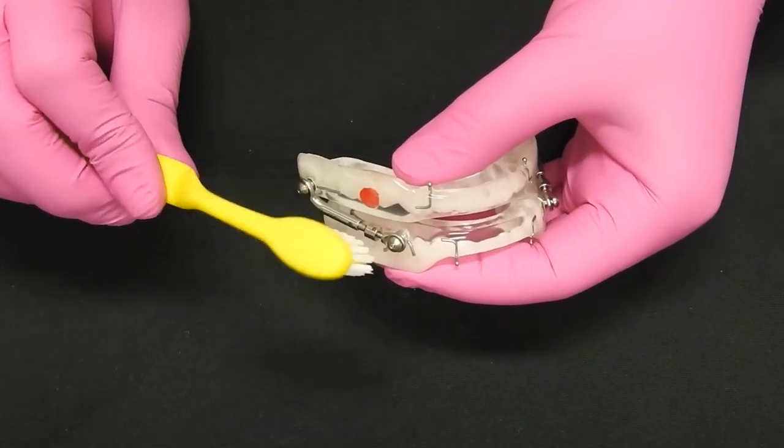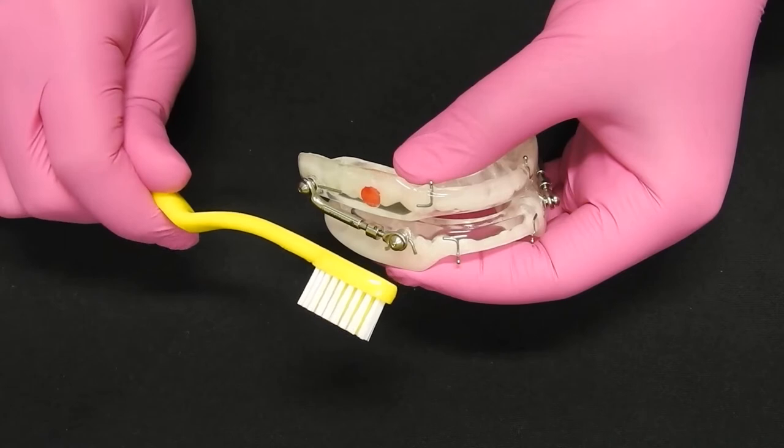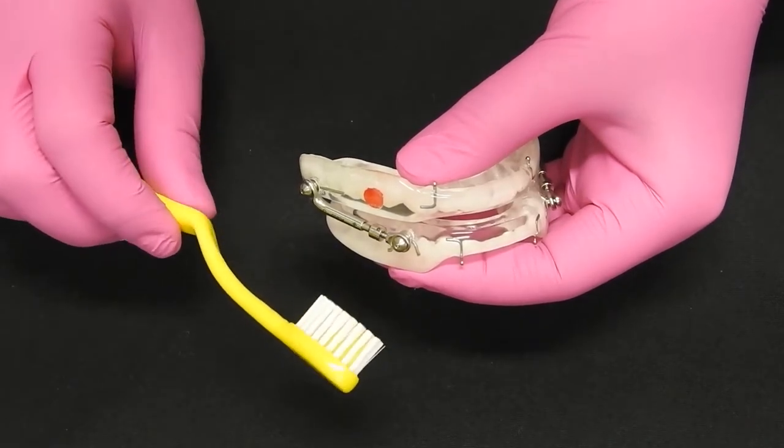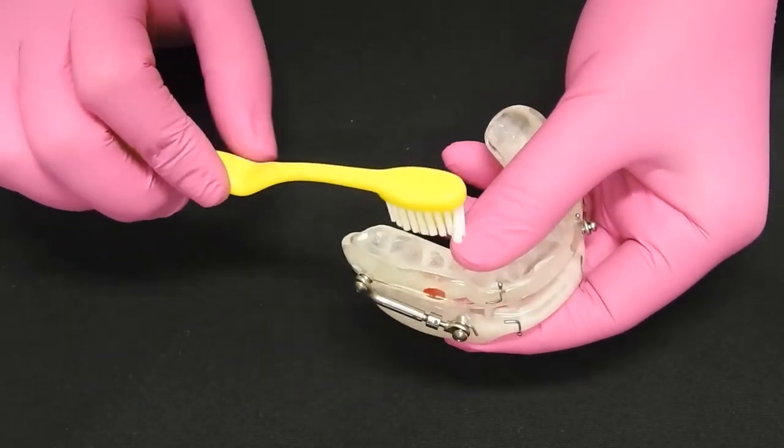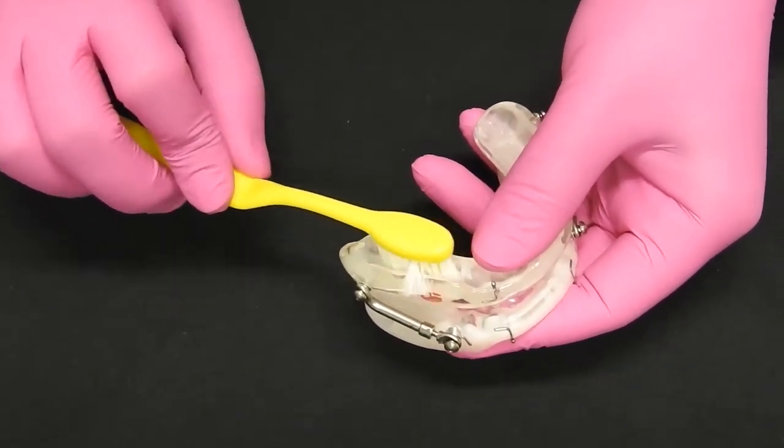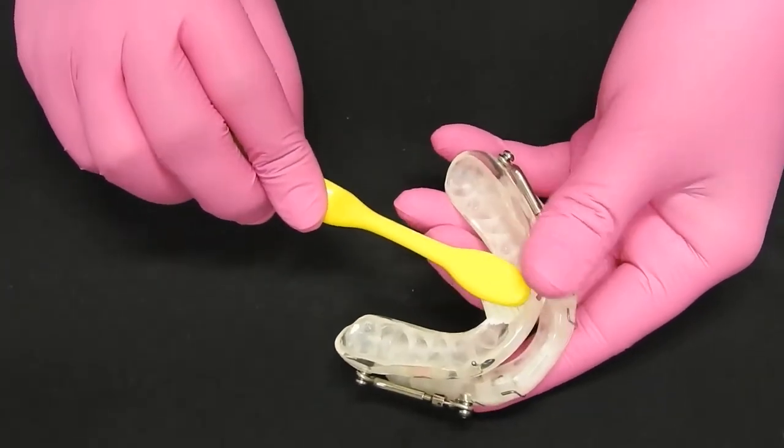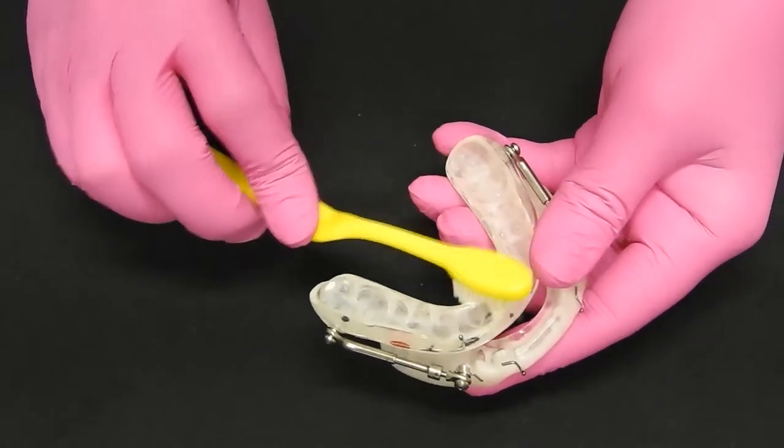Take your toothpaste or soap and put it on your soft-bristle toothbrush with water, and brush inside where it contacts your teeth.